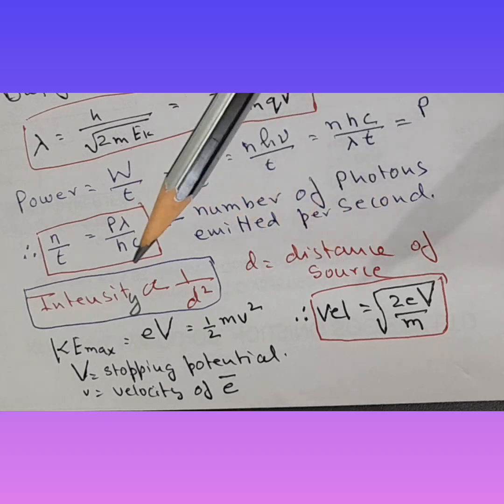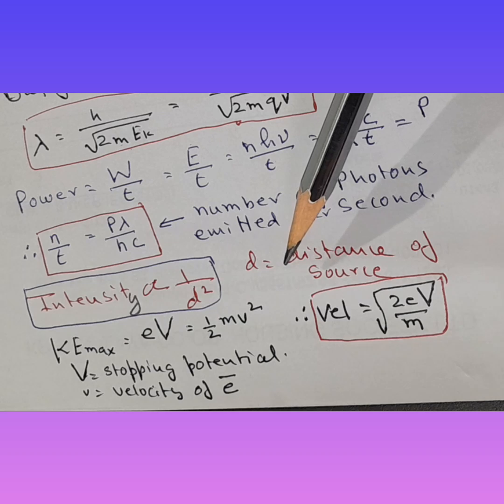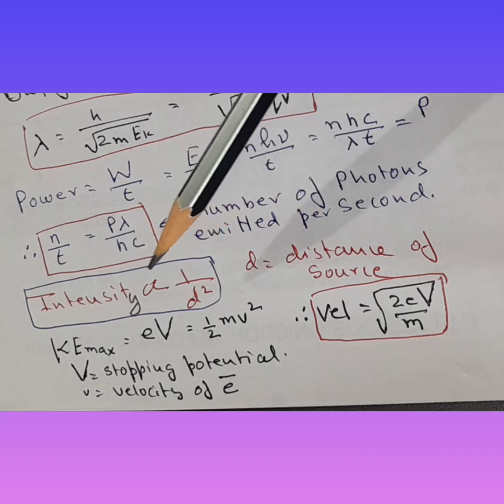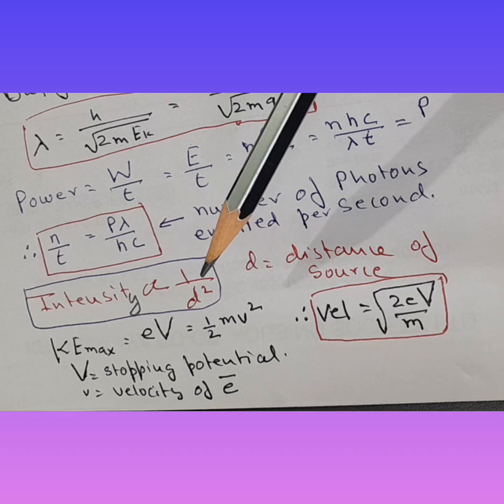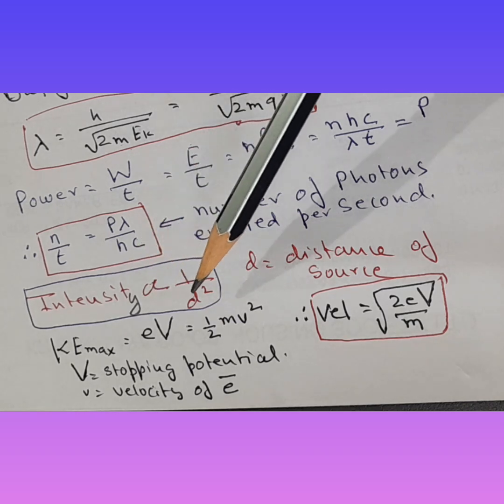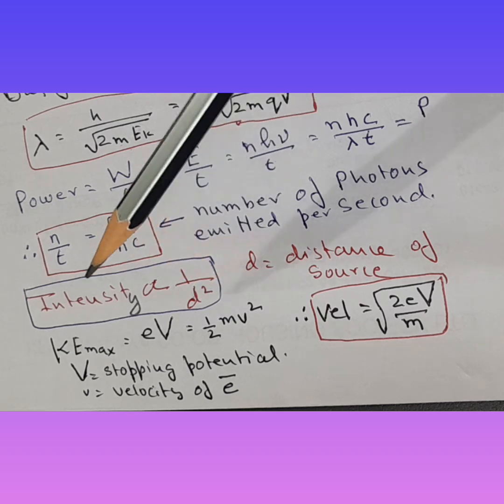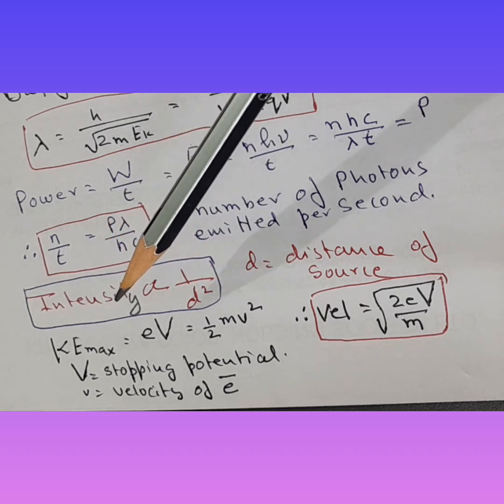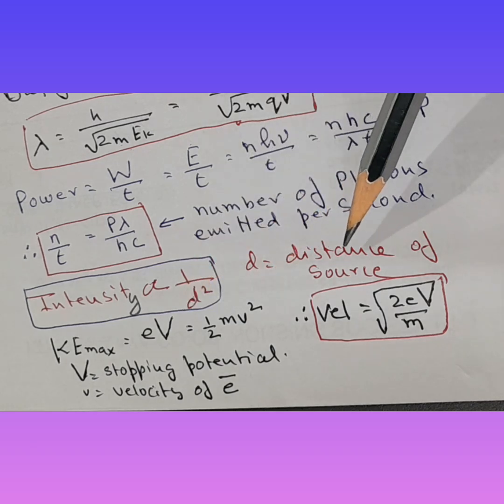Now if the source is kept too very far away from target, then obviously the intensity that the target would experience is much lesser than when it is kept very close. So this becomes very clear. So intensity and experimentally it has been found out that it is inverse square law again. So intensity is inversely proportional to d square, that is distance of source.